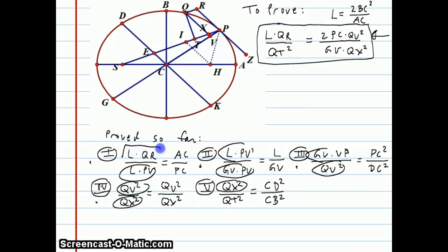And the L over QR that starts it is what we want to have on top here, and the QT squared on the bottom is what we want to have here. So what he's going to do is actually multiply these five equations together. And let's see what happens.